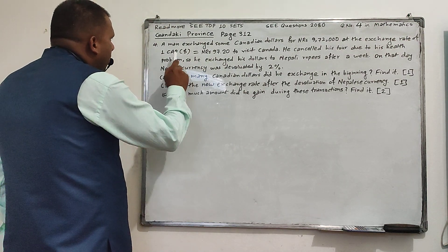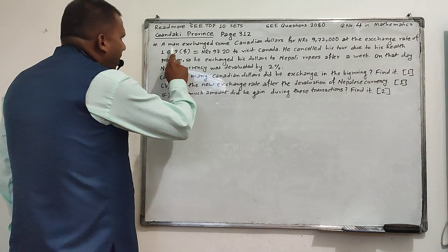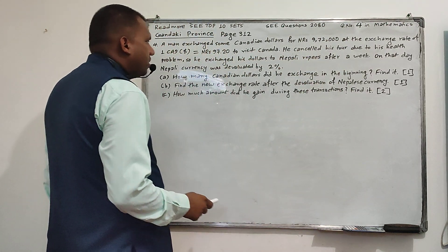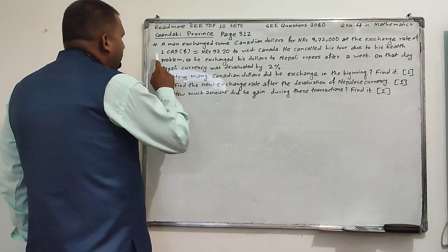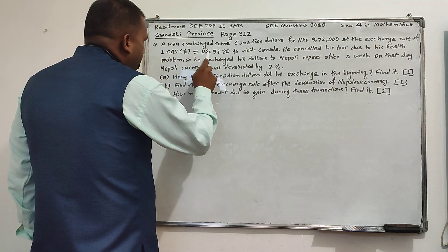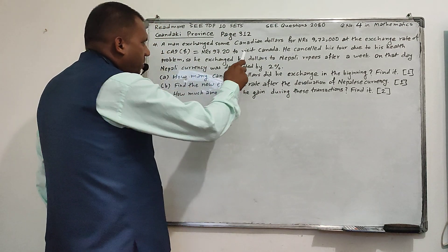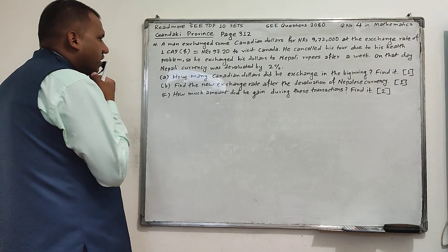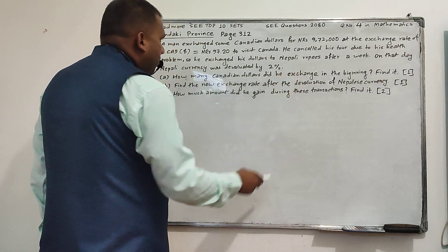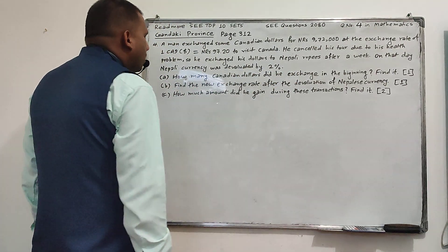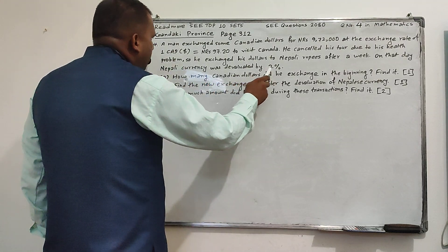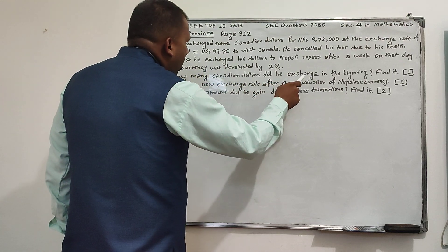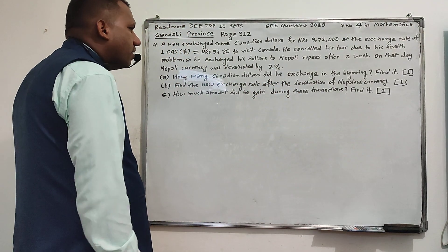The question is: question four from Gundagy province. A man exchanges some Canadian dollars for NRS 972,000, at the exchange rate of one Canadian dollar equal to NRS 97.20, to visit Canada. He cancelled his trip due to his health. So he exchanges his dollars back to NRS after two weeks. On that day, the representative currency was devalued by two percent. Part A: how many Canadian dollars did he exchange in the beginning? Find it.